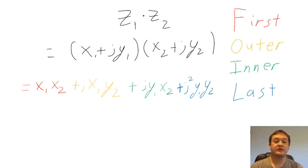Remember that j squared is equal to negative 1. Finally, we must reorganize the variables to put the real parts together and the imaginary parts together.